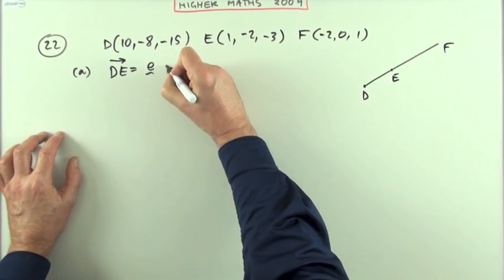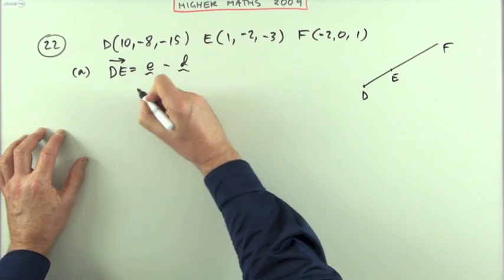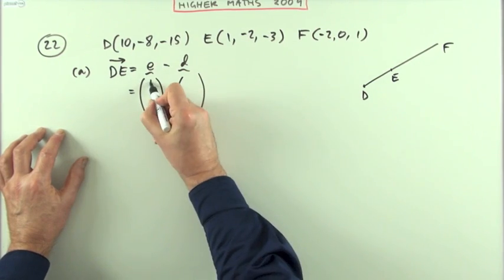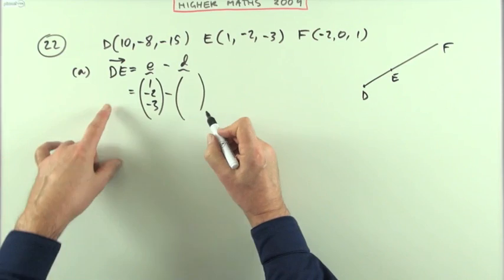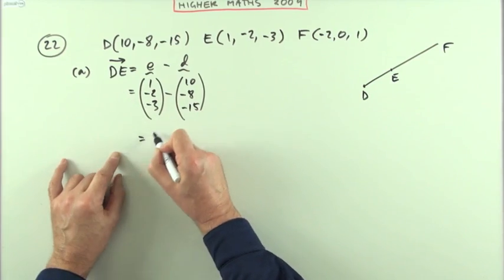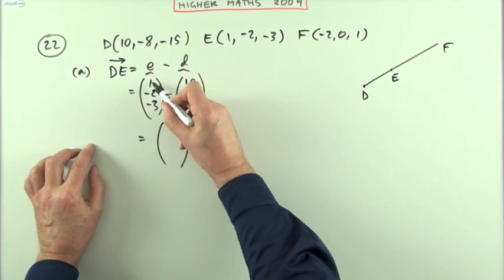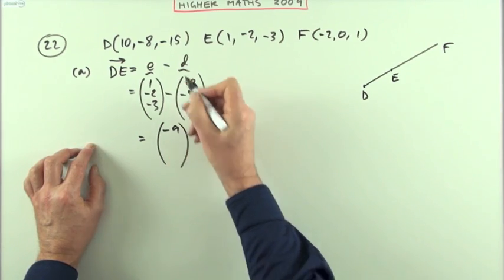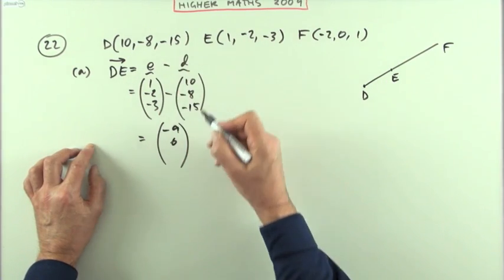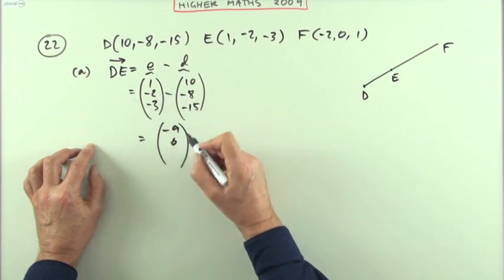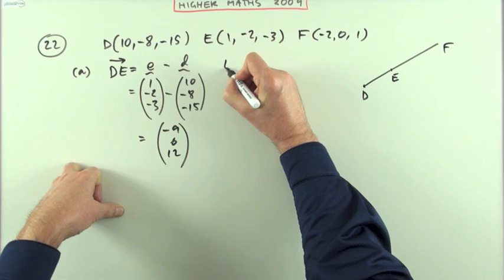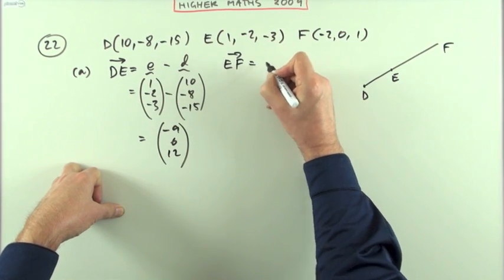Generally you write it down as subtract the position vectors. So E being (1, -2, -3) and D being (10, -8, -15) gives you 1 take away 10 is -9 because it's going back 9, -2 plus 8 is 6 because it's going forward 6, and -3 plus 15 is 12 because it's going forward 12.